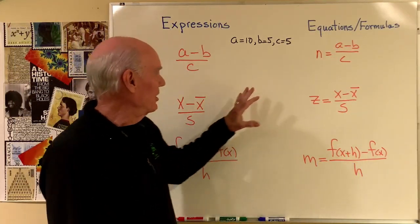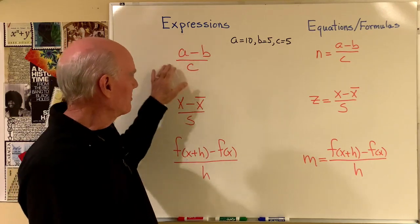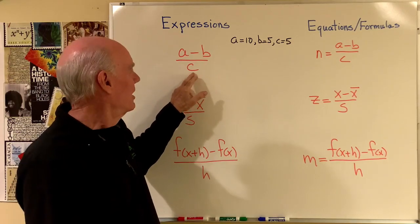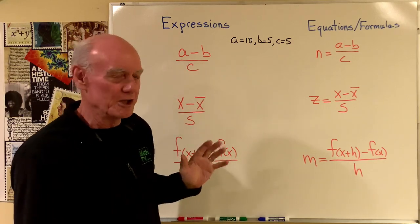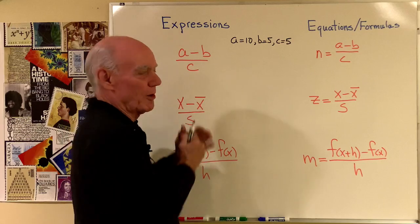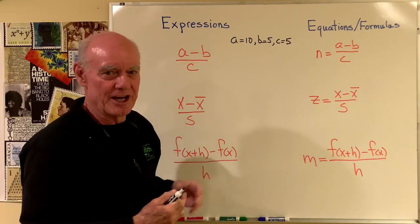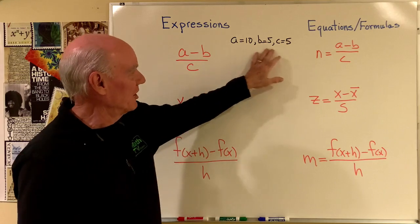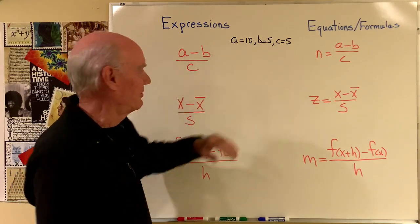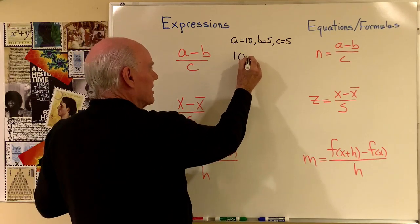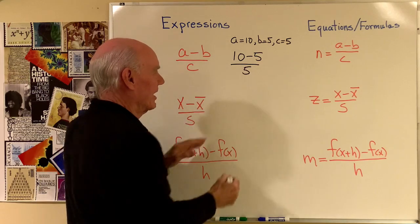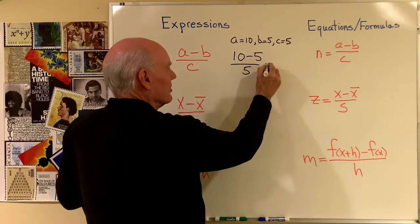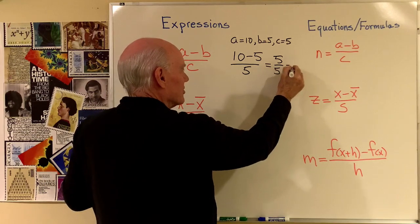We're back. So here I've written some kind of common expressions that you're going to see. There's a lot of expressions in mathematics that have this form. The difference of two numbers in the numerator and some number in the denominator. Now what you need to know about the fraction bar is that it works like a grouping symbol. It sets the numerator and denominator apart from each other. So you want to simplify the numerator first, then the denominator, then divide. So let's just take a look at this problem right here when A is 10, B is 5, and C is 5. So it would look like this, 10 subtract 5 divided by 5. Now you can't cross over and divide 5 into 10 or anything like that just yet. So I need to simplify 10 subtract 5 is 5 divided by 5 is equal to 1.